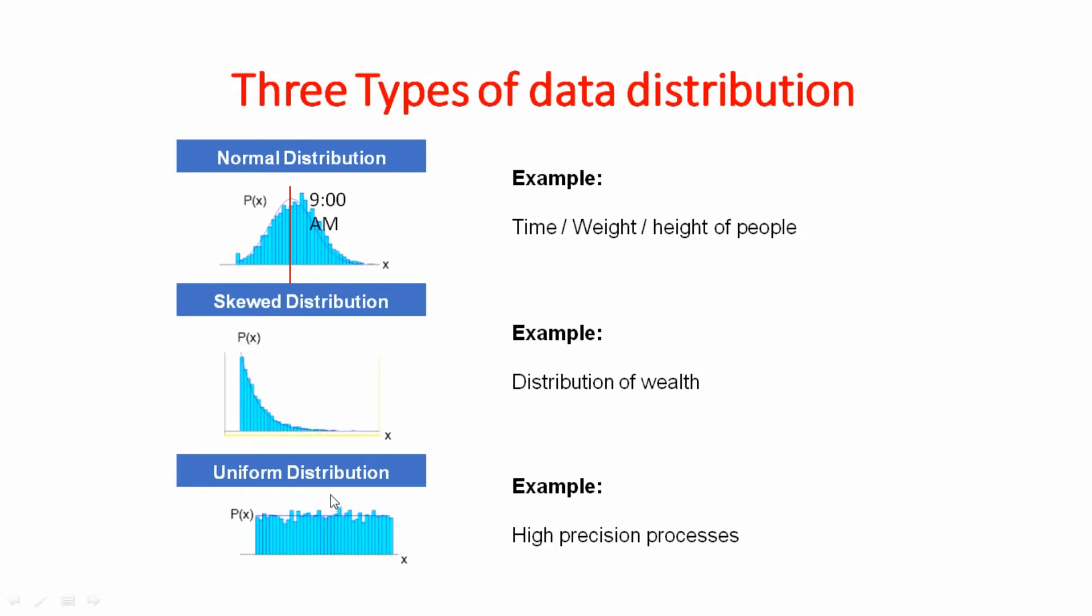There is another type of distribution which is uniform distribution. And in the same example, if everybody has come in the bus and got a drop at 9 o'clock in front of the class and entered the class at the same time. So it means it's high precision data. Means everybody has entered at 9 o'clock. So the data would be uniform in that case.